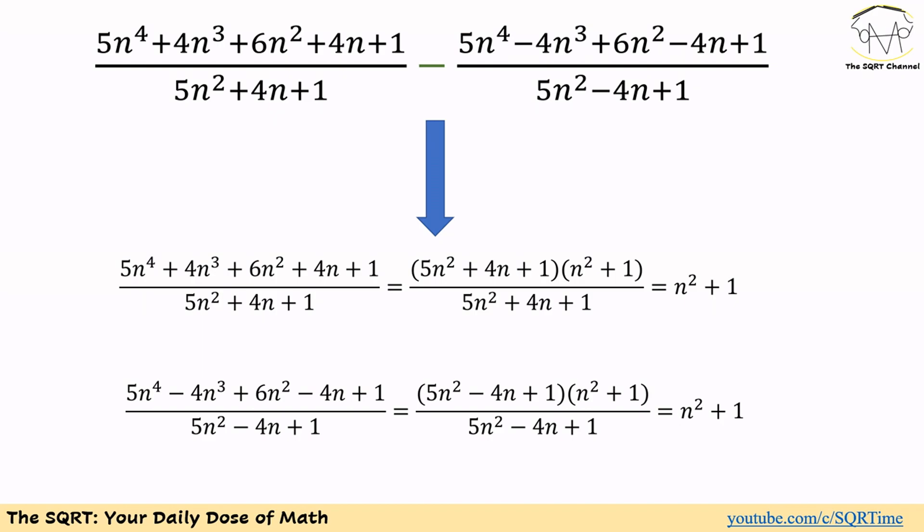The first factor is the term we have in the denominator, which is 5N² plus 4N plus 1, and the second factor is N² plus 1. If we replace these and simplify — cancelling the denominator with the matching factor in the numerator — then for the whole first term we get N² plus 1. We can use the same approach for the second term, which also simplifies to N² plus 1.